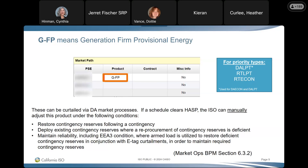The priority types listed include DALPT — used for both DAECON and DALPT because they have the same curtailment priorities. These let the SYNC BA know that in certain situations the ISO could reduce the awards. For the day ahead, the megawatt value should be based on the cleared RUC values, not IFM results — they could be different.